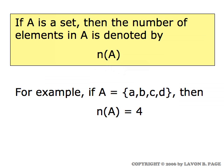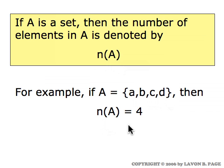For example, if capital A is the set shown here, it has the four elements A, B, C, and D, so N of A — the number of elements of A — is equal to four.